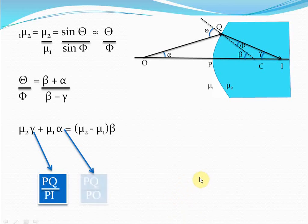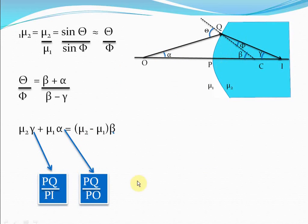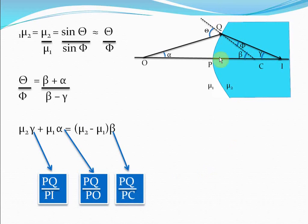Similarly, alpha can be written as PQ by PO — alpha is approximated as tan alpha, which is the same as PQ by PO. And beta is clearly PQ by PC, because beta can also be written as tan beta approximately, which is approximately equal to PQ by PC.